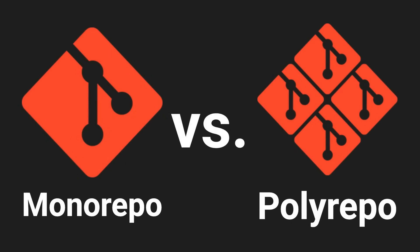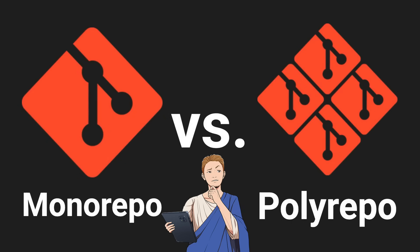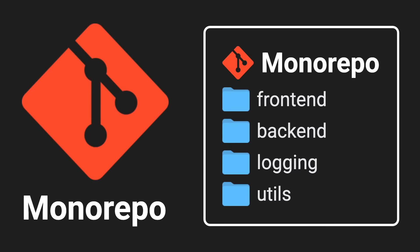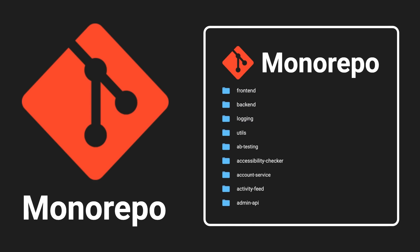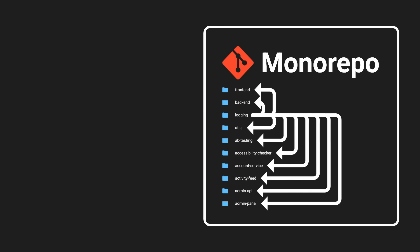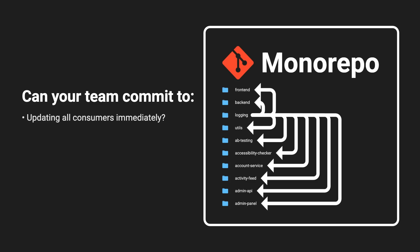So which of the two approaches should you choose? It ultimately depends on the size and structure of your company and how far along your product is. My practical suggestion: always start with a monorepo. As long as you only have a handful of applications and internal libraries, it's definitely the simpler approach. As the repo grows and libraries get more mature, once a library starts having multiple consumers, your team has to make a decision: do you want to commit to updating all consumers whenever you make a change to a dependency? Or at least, are you willing to invest in making those changes backwards compatible — for example, via feature flags?